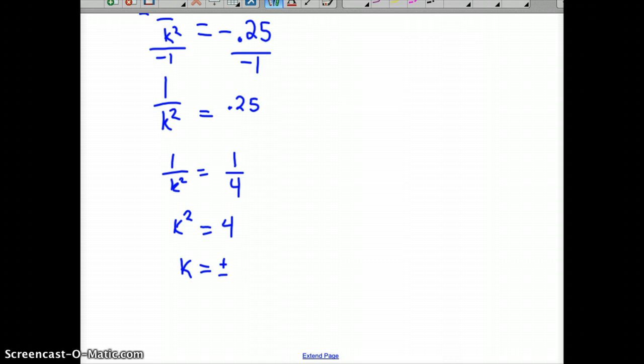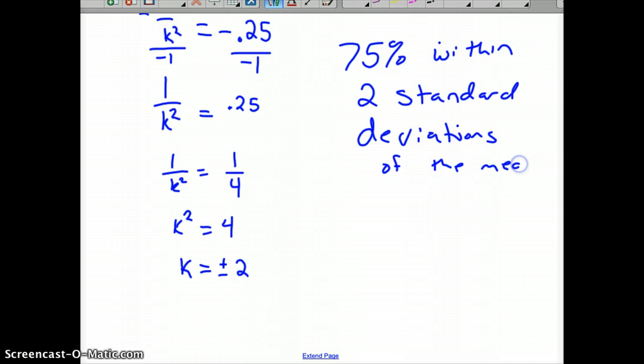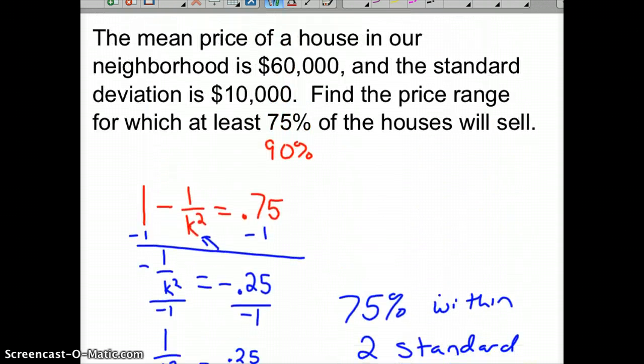So k could be plus or minus 2. So 75% of our data, so with that, 75% of our data will be within two standard deviations of the mean. So what does it mean in our particular problem? So in our particular problem, we know our mean was $60,000. And we knew our standard deviation for our sample was $10,000.